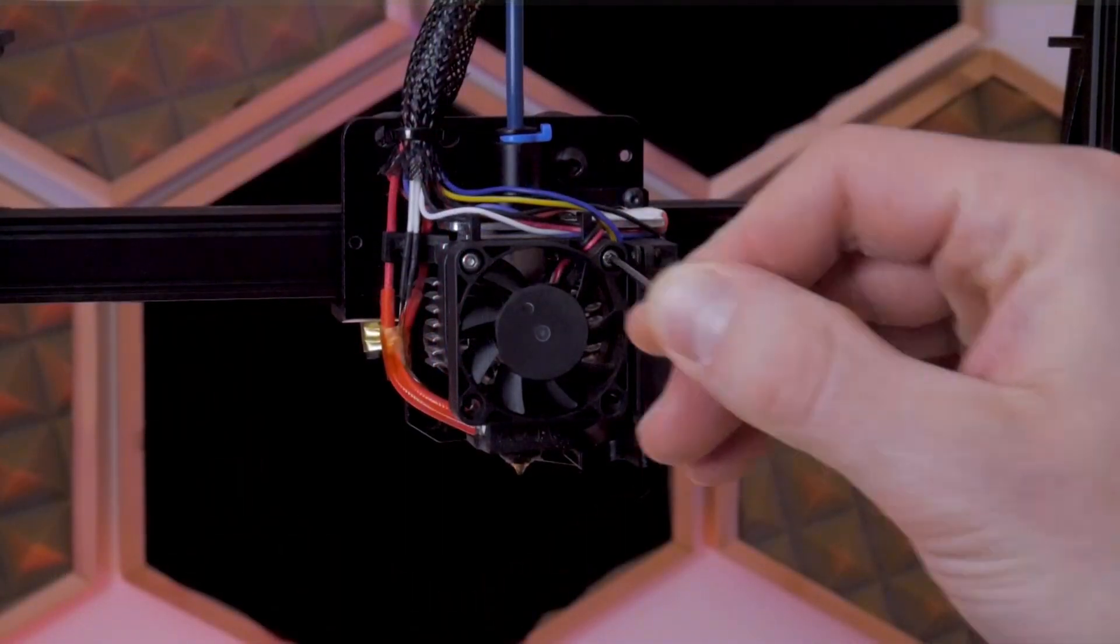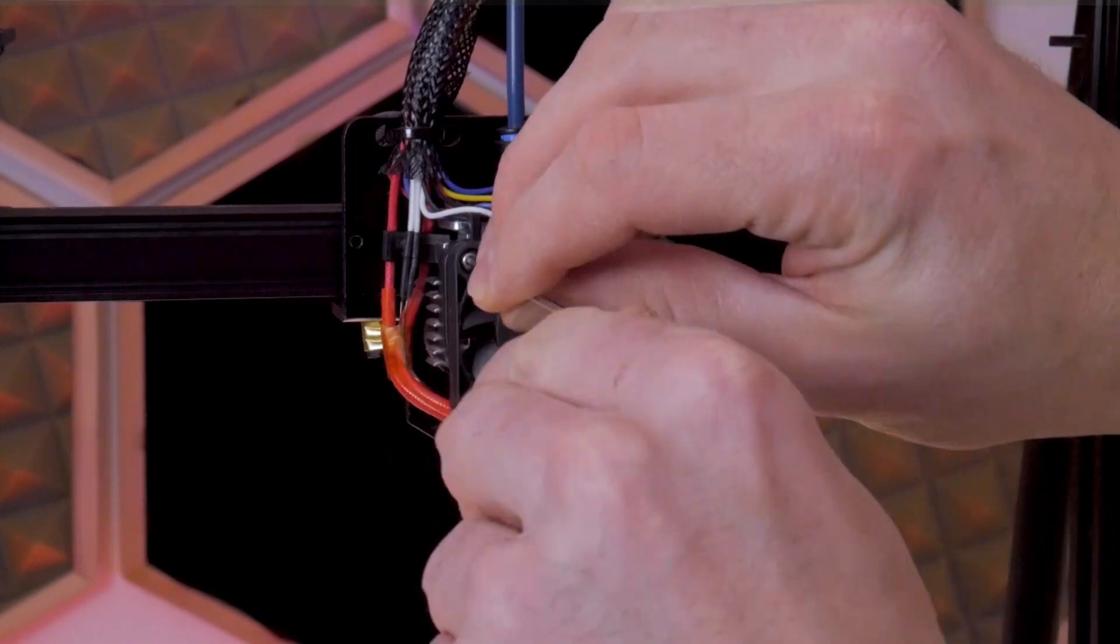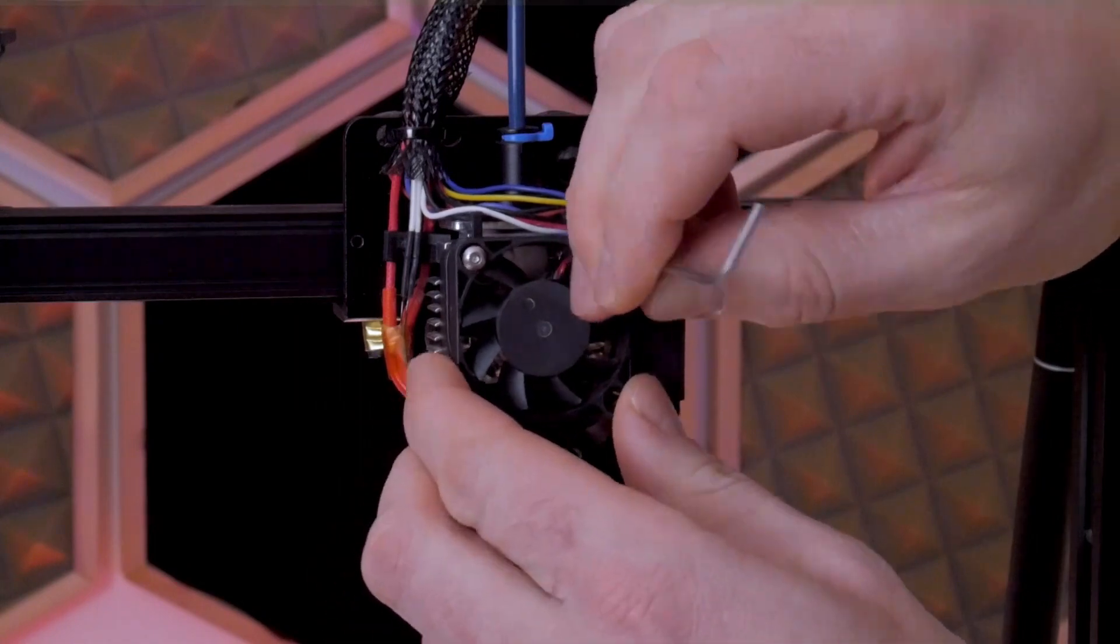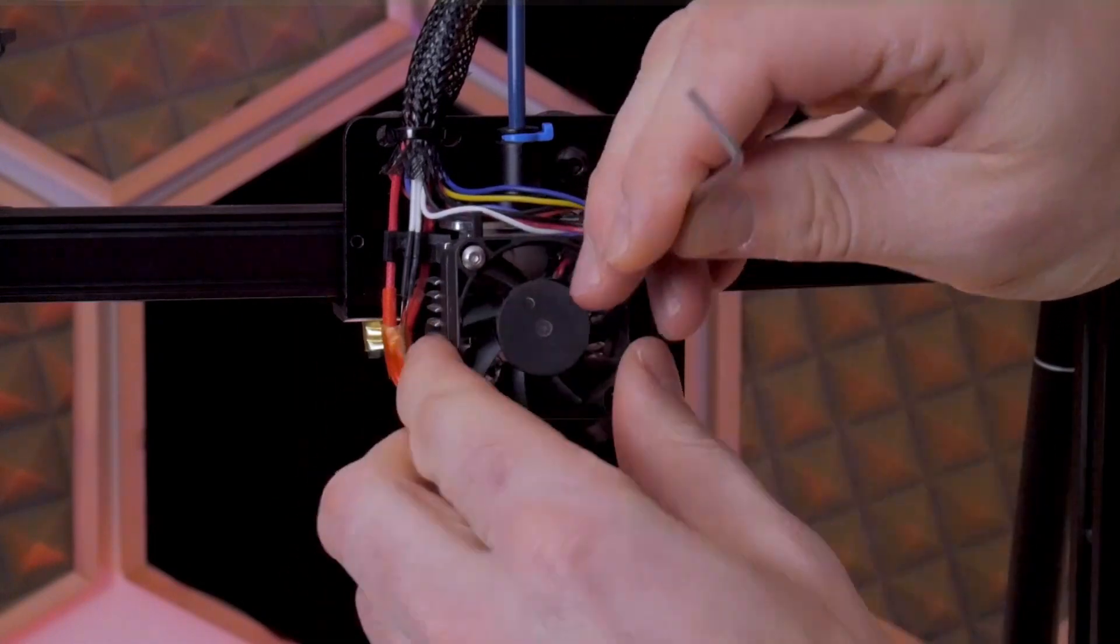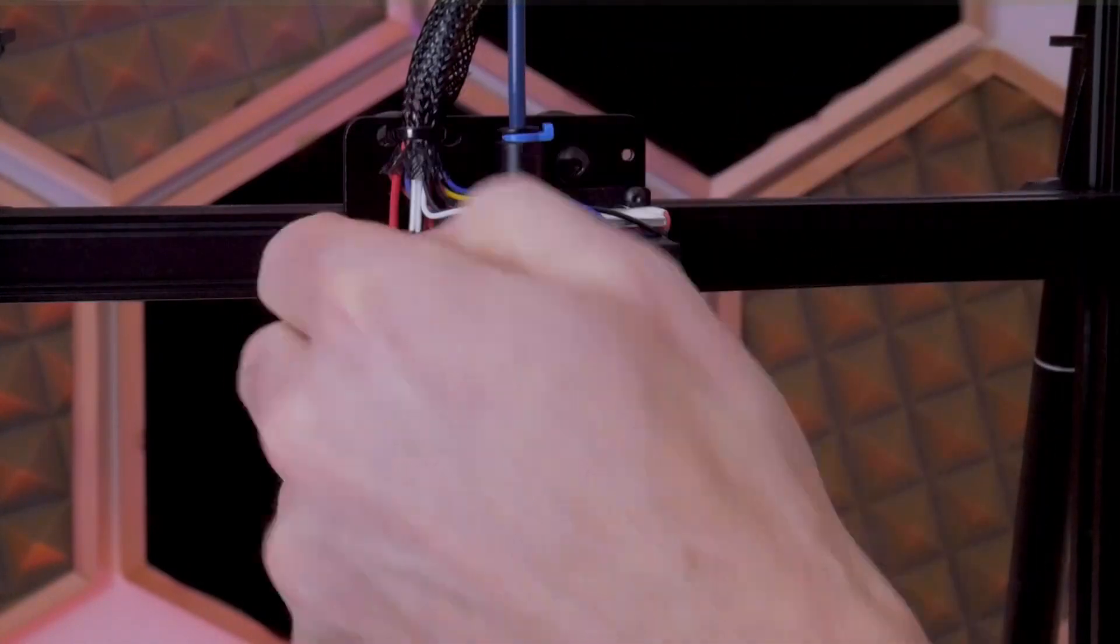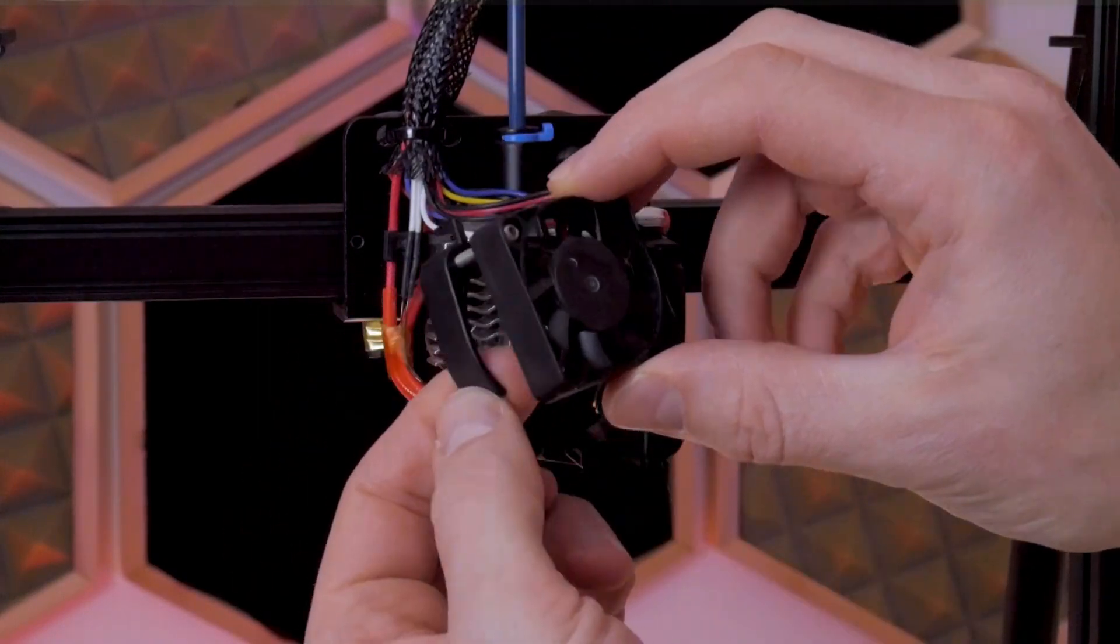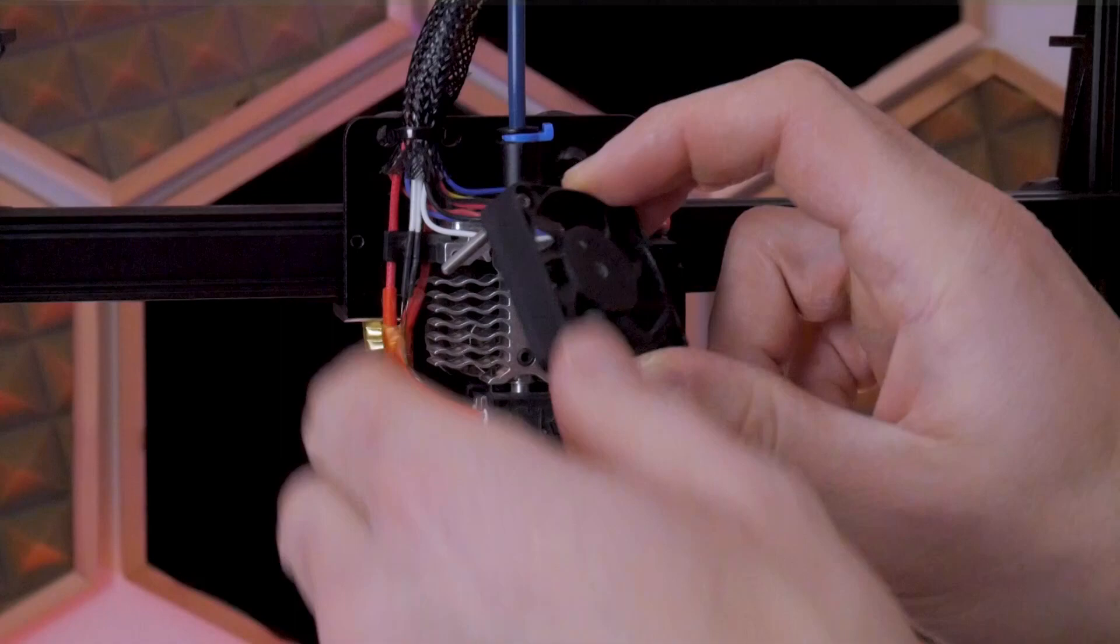With the inner parts now exposed, we're going to remove the fan first. There are two M3 screws holding it in place. We're not going to be reusing these screws or the plastic bracket behind the fan, so once you remove those you can just get rid of them because later we're going to be using an adapter with new screws.